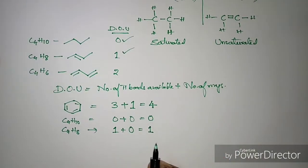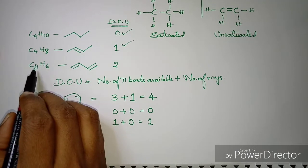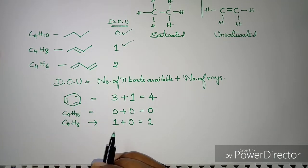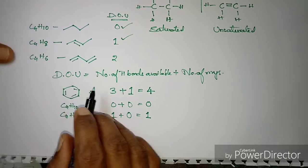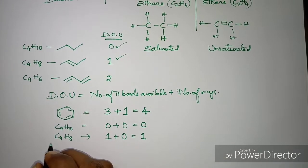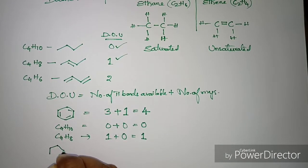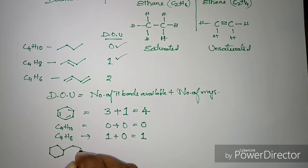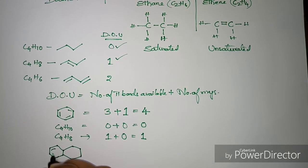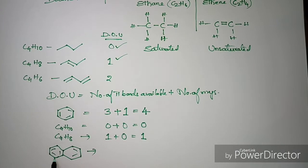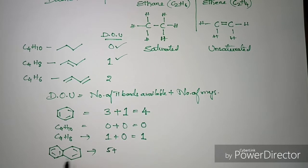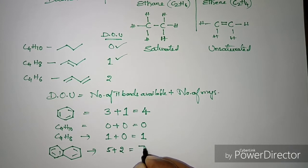You can also check this out for butyne C4H6. Now let's try one more ring structure example — naphthalene. In the case of naphthalene, how many pi bonds are available? The number of pi bonds available are five. How many individual rings are available? Two. So its degree of unsaturation value is seven.